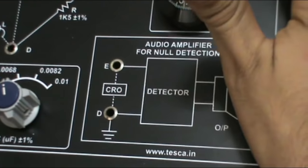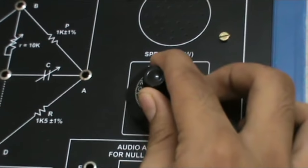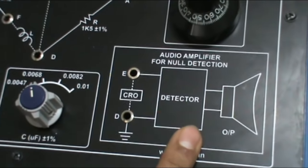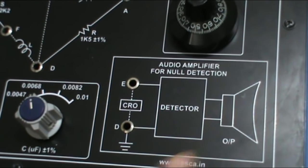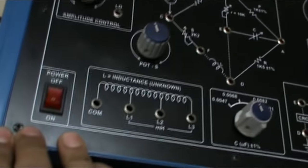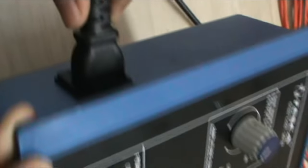This is the output speaker. This is the resistance that varies. This is the potentiometer S. This is the audio amplifier for null detection. This is the power main on-off switch and through this we connect our AC mains from here.